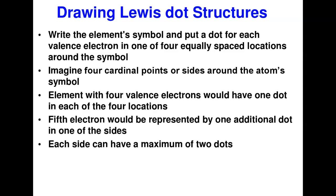For me, practicing is what makes you understand. The most important thing is to write the element symbol and use dots to represent the valence electrons. By convention, imagine four sides around the atom — top, bottom, left, right — and place dots on those sides. The maximum for representative elements is eight electrons total.